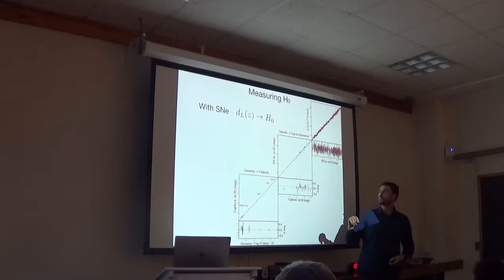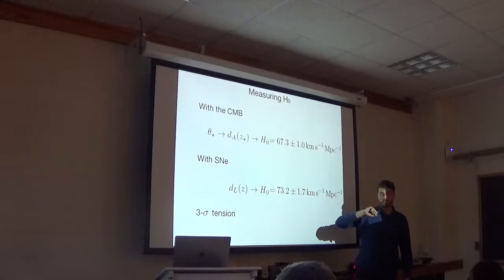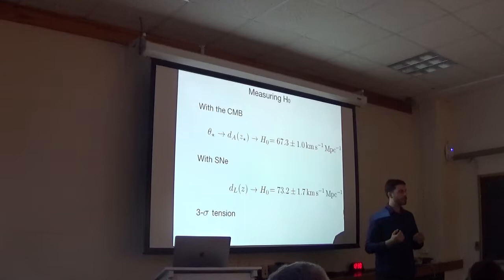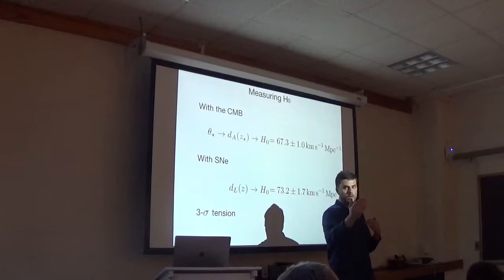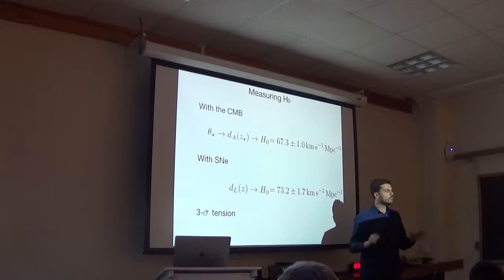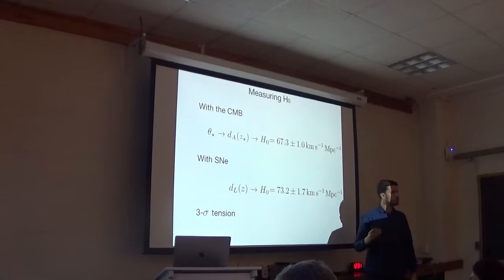And when you compare the H-naught measurements, it turns out that the CMB measures H-naught of 67, supernovae of 73. And these two values are at three sigma tension. If history is to be learned from, last time this happened, in 50 and 100, we taught to be in between. But some people say there might be new physics happening. So the CMB distance is measured for much larger redshift than supernovae of the global universe, there could be something going on.